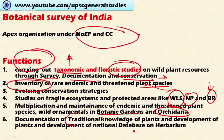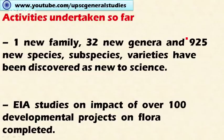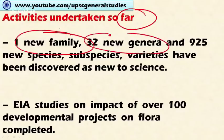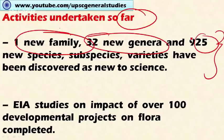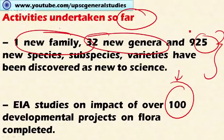The Botanical Survey of India also develops a national database of herbarium specimens — collections of plants in dried sample form. Its achievements so far include the discovery of one new family, 32 new genera, and 925 new species, subspecies, and varieties new to science. It has also undertaken environmental impact assessment studies on over 100 development projects — such as dams, industrial projects, and mining activities — on flora.